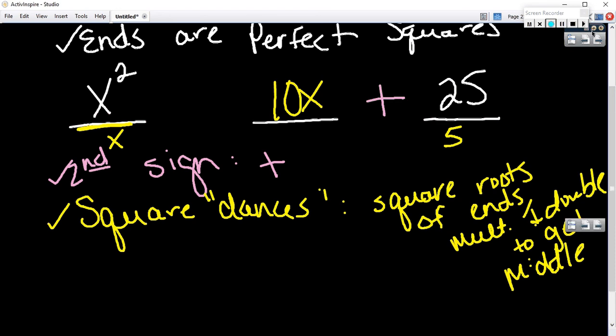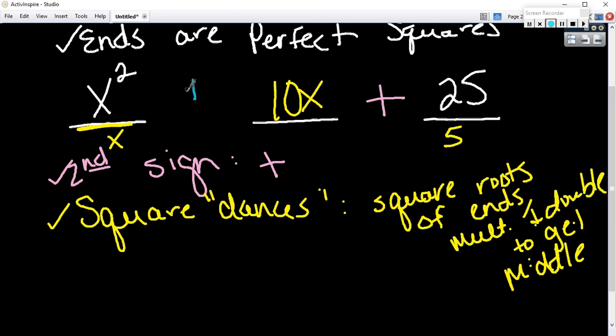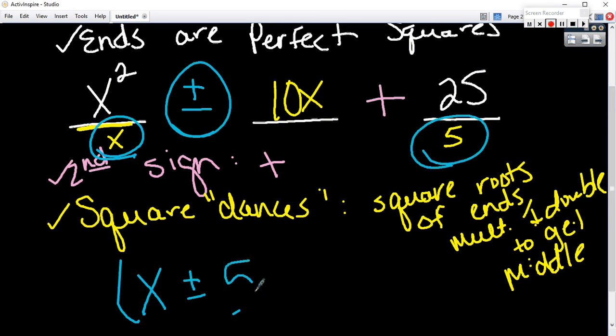If it meets these criteria, I didn't say anything about the first sign because the first sign can be plus or minus. Then you take the square root of the first, you take the first sign whichever it was, and the square root of the last, and you put a square outside. If you put this in the box you would get x plus 5, x plus 5.